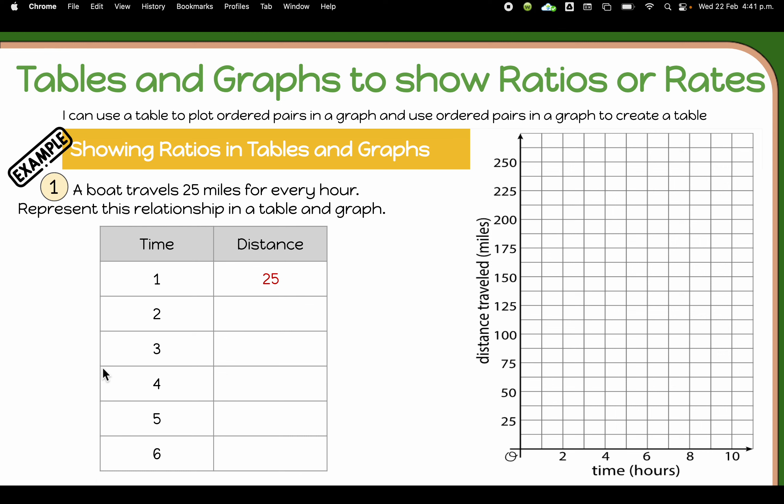So taking a look at this example, we are going to use a table and a graph to show this rate. It's a boat travels 25 miles for every hour. So this is actually a unit rate because we're finding out how much it travels per one hour. Remember that a unit rate involves one unit of something.